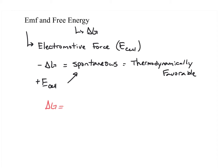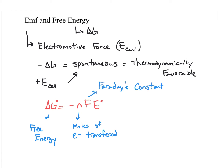The formula, which is on your formula sheet, is: delta G standard equals negative NFE standard. Delta G is free energy; N stands for moles of electrons transferred; F is Faraday's constant, defined as 96,485 coulombs per mole; and E is the cell potential. So if you know the number of moles transferred, Faraday's constant, and the cell potential, you can calculate the delta G of the voltaic cell.